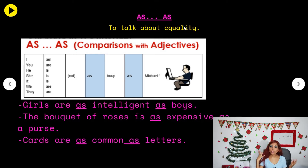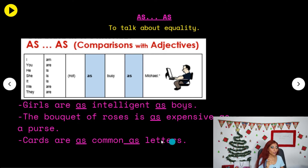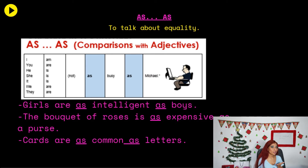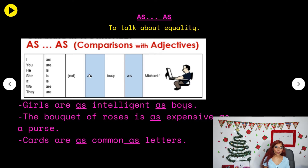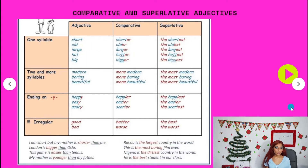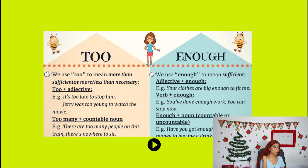Make sure you are copying this in your notebooks. It's very important to have this so you can study and refer back to it for the following activities. Now let's look at 'too' and 'enough.' We use 'too' to mean more than sufficient or more than necessary. The structure is: too + adjective. For example: it's too late to stop him. Jerry was too young to watch the movie. 'Too' is like saying 'demasiado' — excessively.